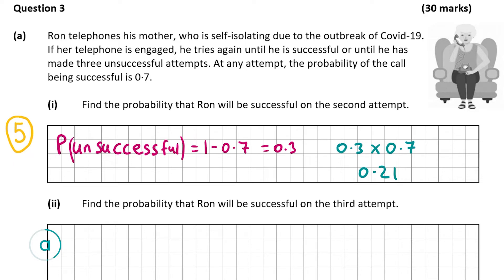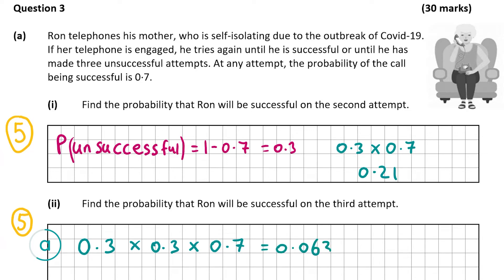Now let's look at part 2, also worth 5 marks, which wants us to work out the probability that he'll be successful on the third attempt. That means unsuccessful on the first and second attempts and successful on the third. The probability of being unsuccessful is 0.3, so we multiply 0.3 × 0.3 × 0.7, which gives 0.063. The probability of being successful on the third attempt is 0.063.